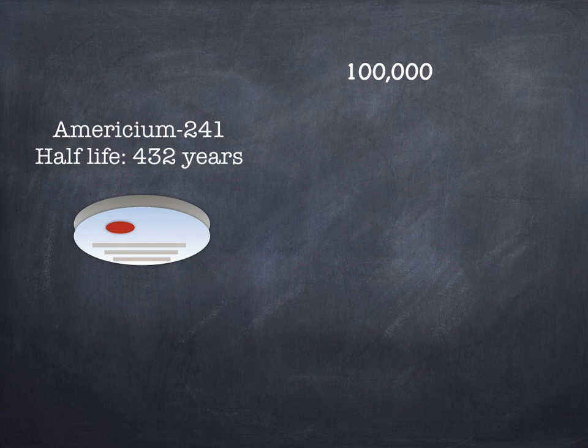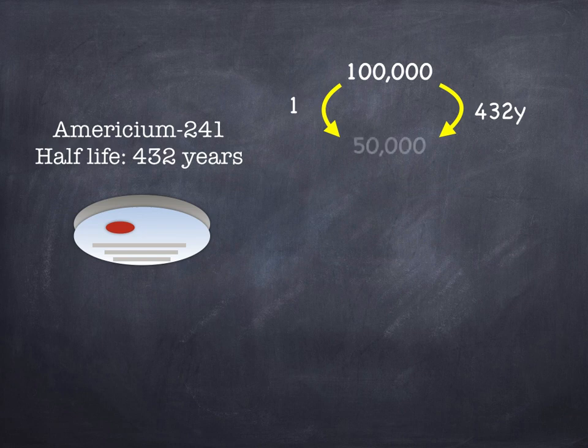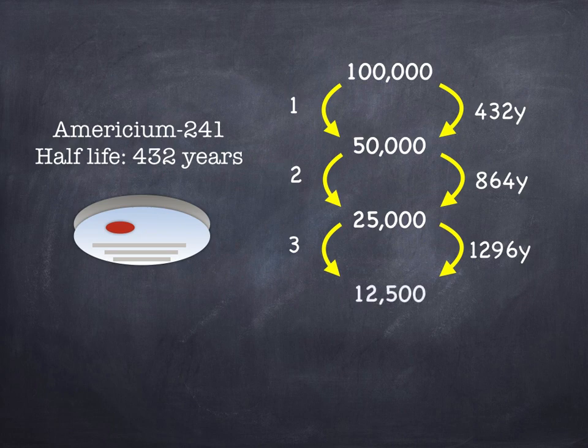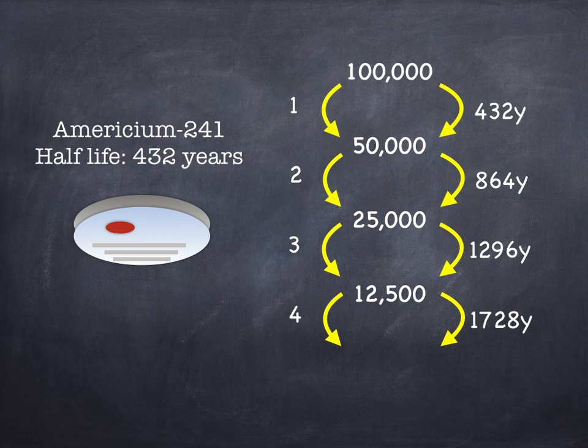Now imagine you start with 100,000 atoms in your sample. After one half-life, after 432 years, you're going to be left with half of those atoms, with 50,000. After a second half-life, another 432 years, you are going to have 25,000. After a third half-life, so that's 1,296 years in total, you're down to just 12,500, and after yet another half-life we've got 6,250.